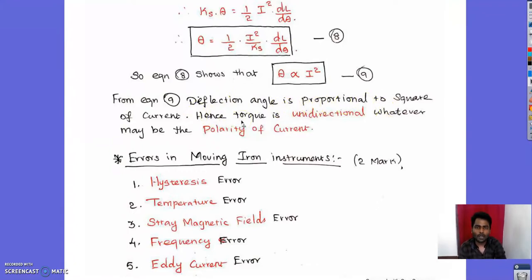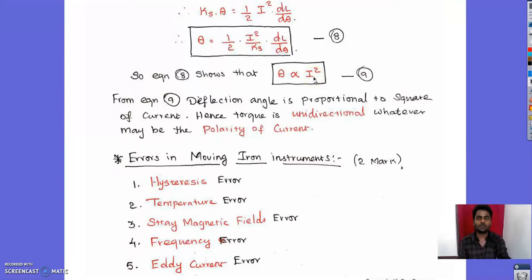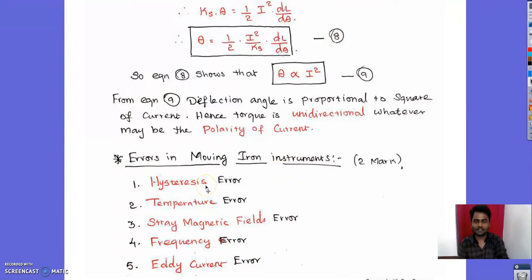The torque is unidirectional regardless of the polarity of the current, because squaring the current always gives a positive value. Therefore the deflection direction is not affected by current polarity. The errors in moving iron instruments include hysteresis error, temperature error, stray magnetic field error, frequency error, and eddy current error.